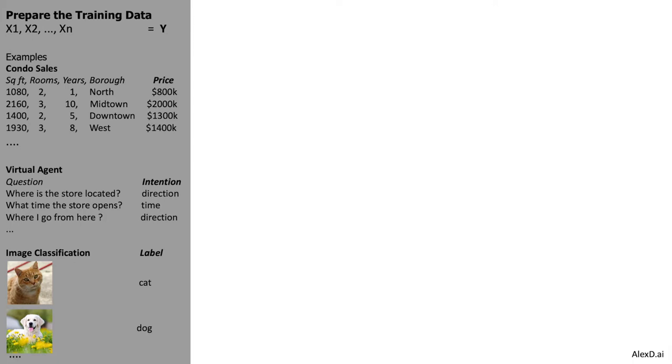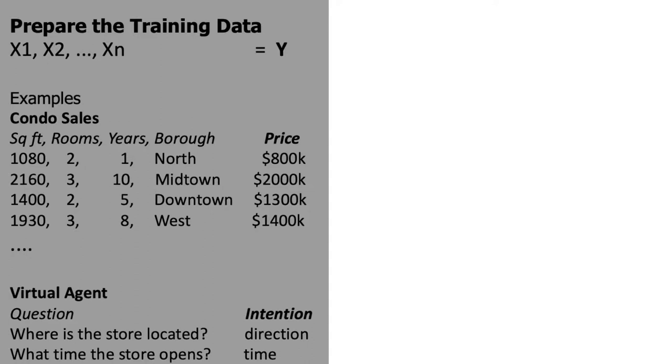The first phase is to prepare the training data. You use training data with features — in this case x1, x2, x3, until xn — and you want to find a target value, an outcome. It could be something in the present, the future, or the past. You have some information, which are the features, and you want to predict an outcome — a new piece of information, in this case the y variable.